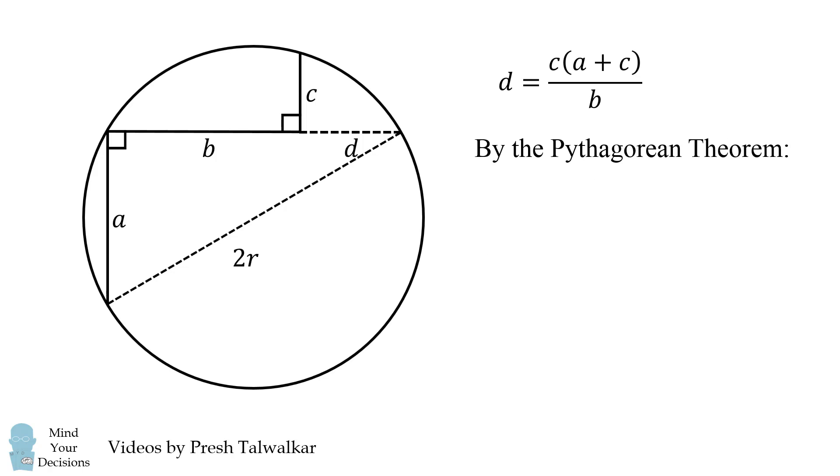Now we can use the Pythagorean theorem. A squared plus the quantity B plus D squared is equal to the quantity 2R squared.